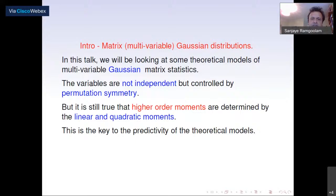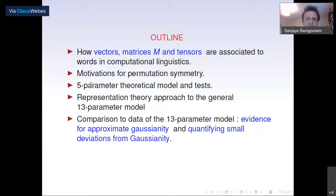I'll start by talking about how vectors, matrices, and tensors are associated to words in computational linguistics, give some motivations for permutation symmetry, talk about the five-parameter model from 1703 and some tests of it, briefly explain the representation theoretic approach to the general 13-parameter model, and then describe the comparison to data where we find very good evidence for approximate Gaussianity and are able to quantify the small deviations from Gaussianity as well.